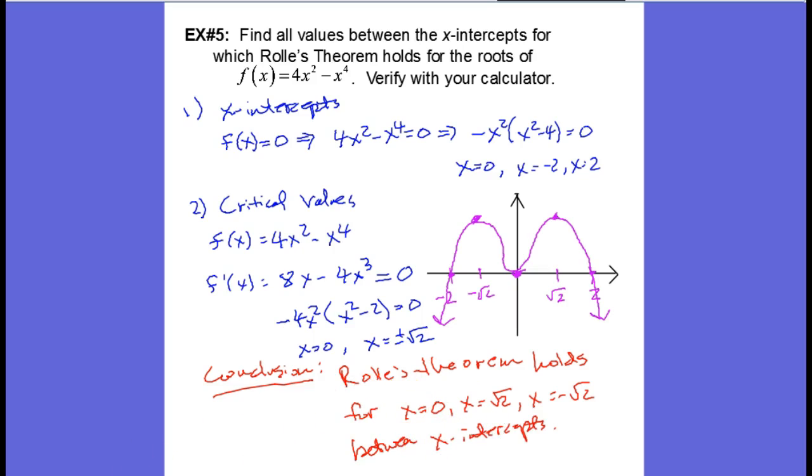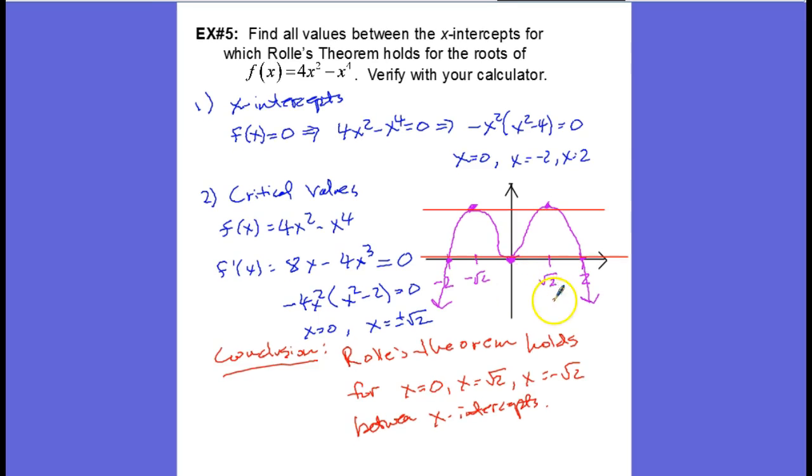So what is Rolle's theorem telling us? Well, what it's telling us is that the x-axis is actually the secant line. That's the line that we graph between the two roots.